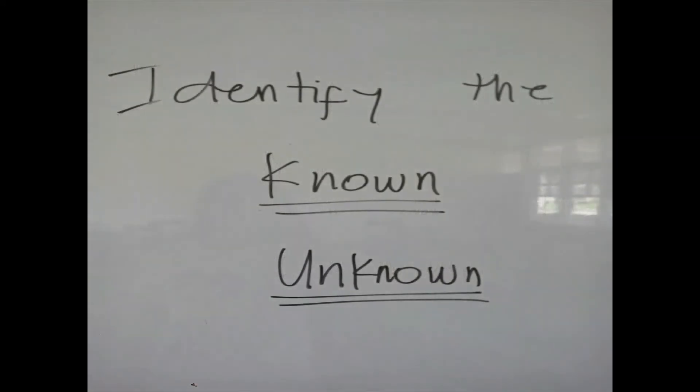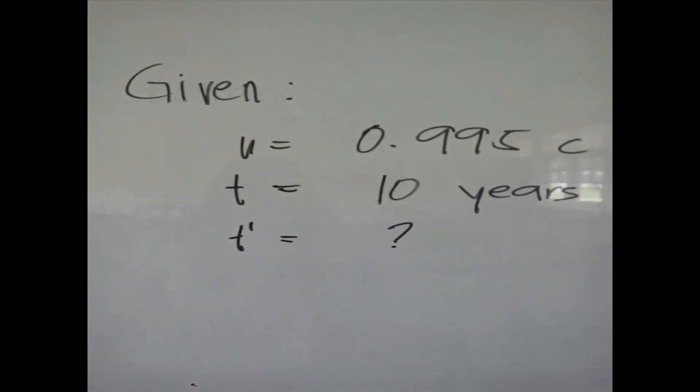The first thing we need to do is to identify the given or the known and what has been asked or the unknown in the problem. In this problem, we have the given speed which is 0.995c and have a given proper time which is 10 years or the time as measured by the moving object.